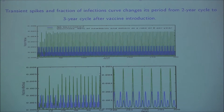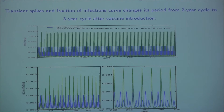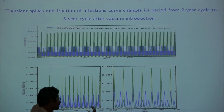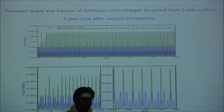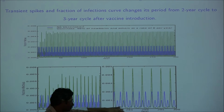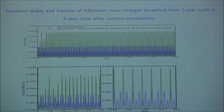We then vaccinate 90% of newborns. Something different happens: we still have a transient period, but after that the vaccination curve settles down to a limit cycle of period three. So even when the vaccination curve settles down, we have big spikes — but now they come every three years instead of two. For two years there is almost no infection in the population, and then suddenly in the third year there are a lot of people getting infected.